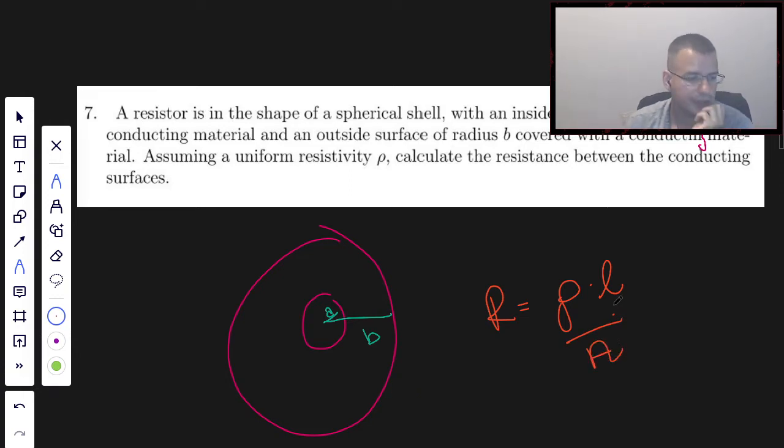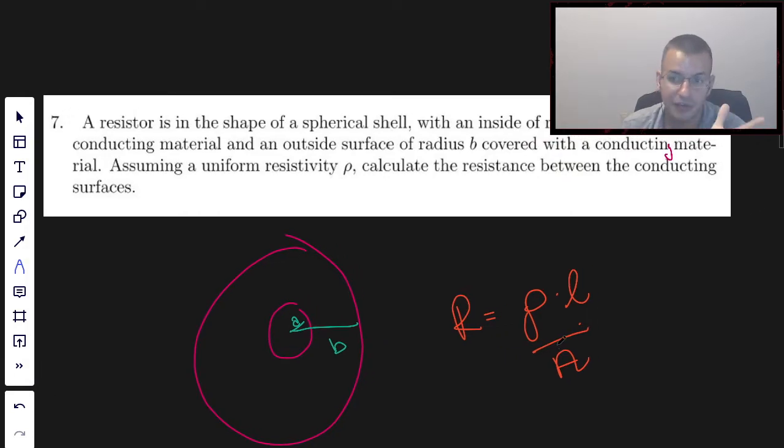And the way I know this is, if you have a very resistant material, you're going to have a lot of resistance. If you have a lot of length that the current has to go through, you're going to have a lot of resistance.